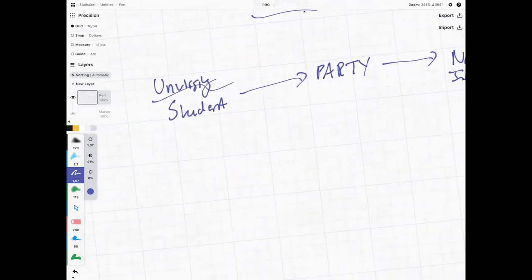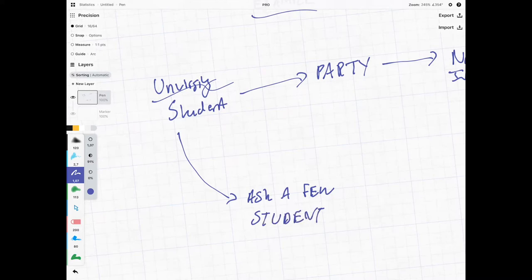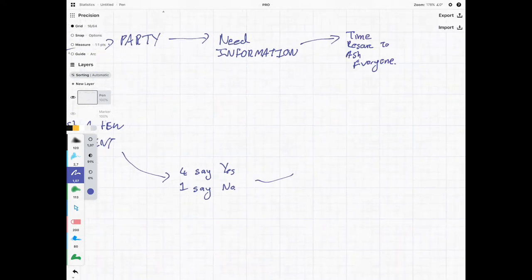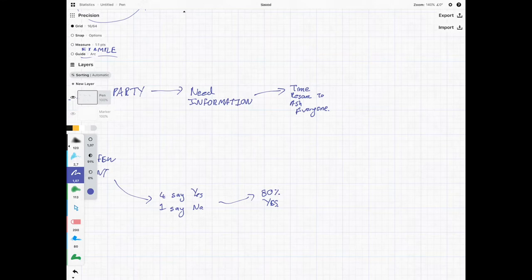Fortunately, and this is where statistics comes in, what we can do is we can ask a few students. So instead of trying to ask everyone, we can just ask a few of them. And let's say we ask five of them, and we see that four say yes and one says no.